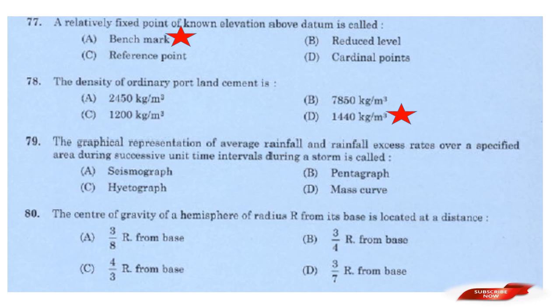Question: The graphical representation of average rainfall and rainfall excess rates over a specified area during successive unit time intervals during a storm is called? Options: Seismograph; Pantograph; Hyetograph; Masker. Answer: Option C — Hyetograph.